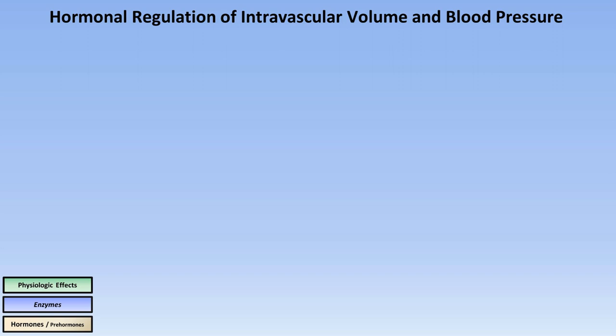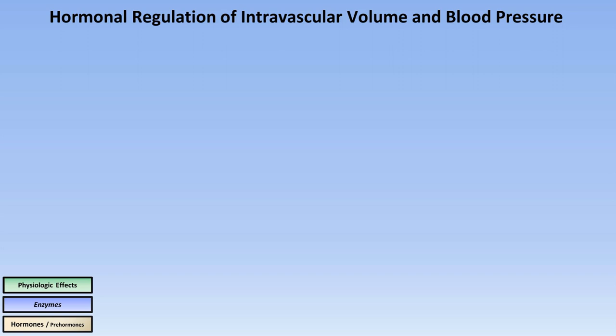As we've seen, regulation of the volume and blood pressure in the body is an incredibly complex process that involves most of the body's organs. The key players are the kidney, the hypothalamus, the anterior and posterior pituitary glands, the adrenals, and the blood vessels. However, the liver, lungs, and heart all play a role as well. So how are all of these anatomically distinct structures linked?